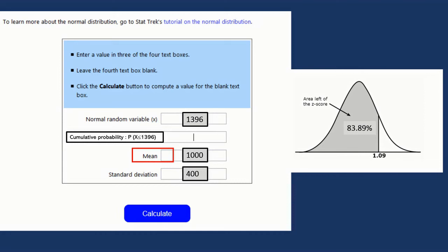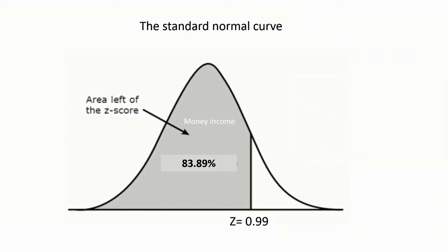You just enter the mean, the standard deviation, and the new value you want to see the area to the left side. When we enter and ask to calculate, you get the value there. So we know that our value to the left side, we have 83% to the left.